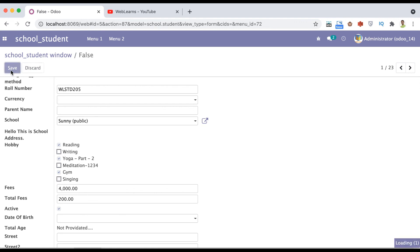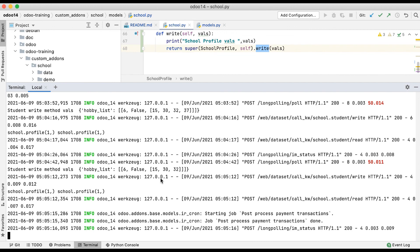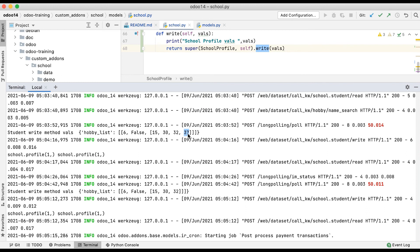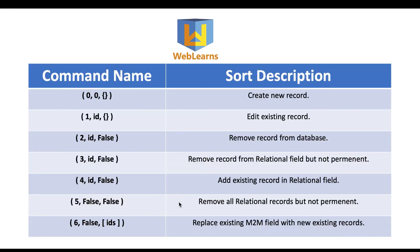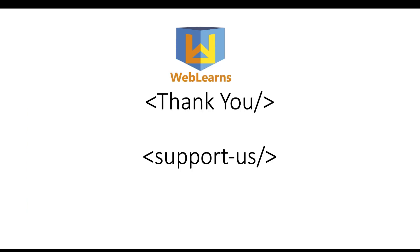Going back to the browser and unchecking one hobby, then saving. In the terminal, you can see it now overrides with only three record IDs — it does not delete the fourth record from the database, it only replaces the selected IDs in the many-to-many field. That's the key difference. We have now seen how Odoo uses special commands for one-to-many and many-to-many operations. All seven commands will be covered practically in upcoming sessions. If you have any doubt, please comment below and see you in the next session.